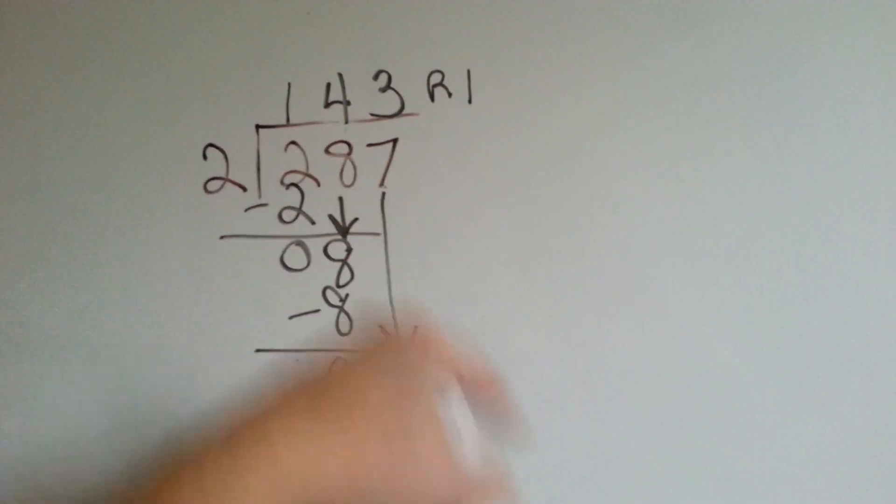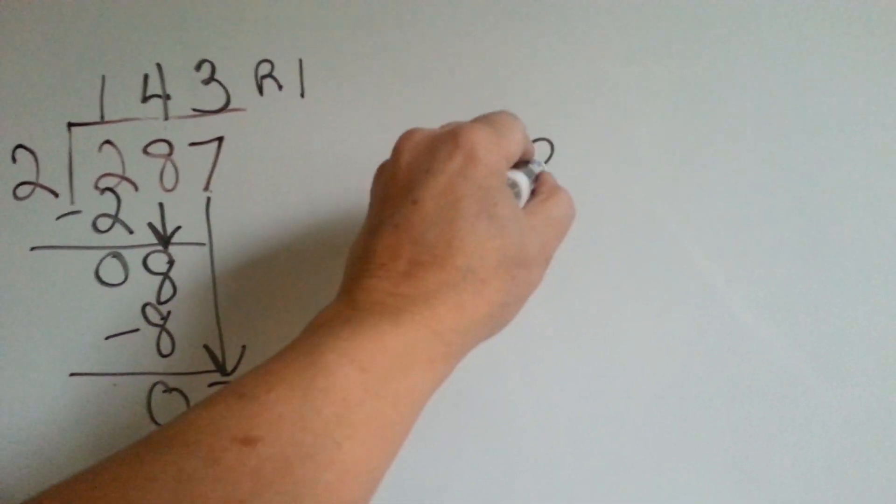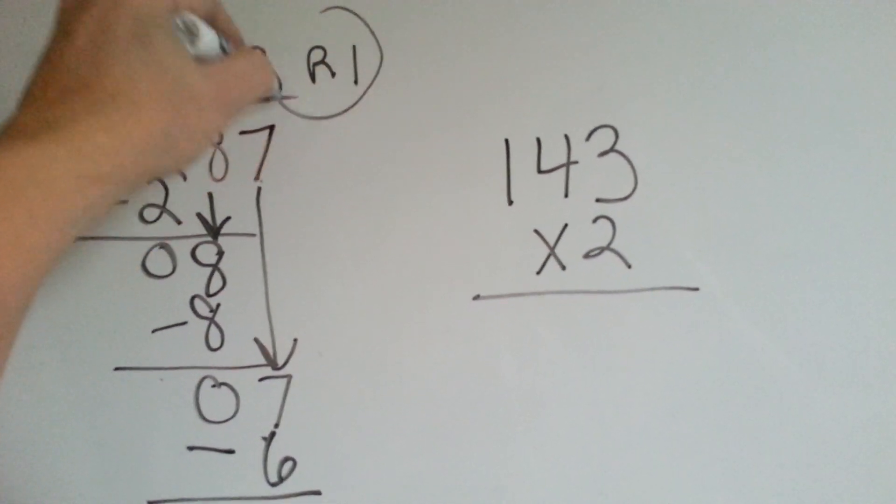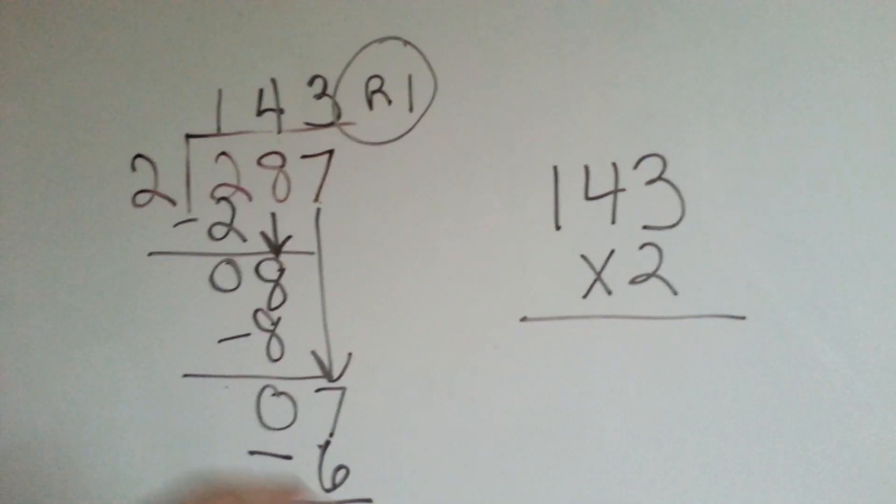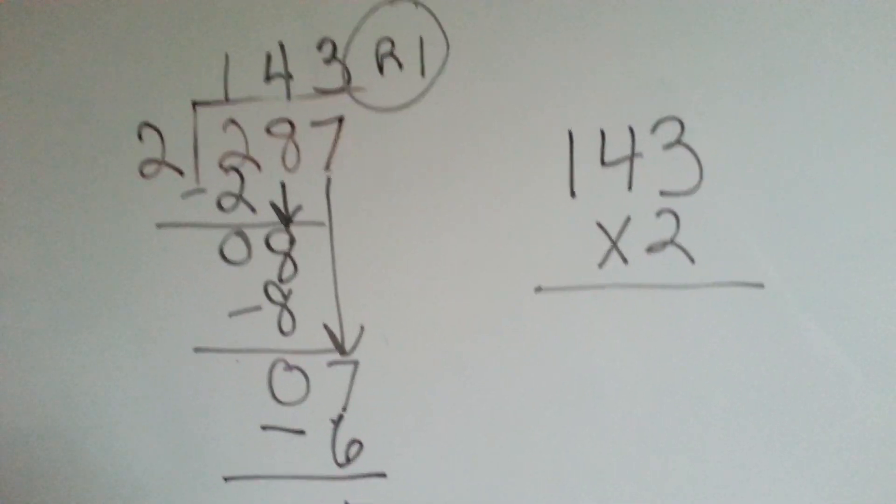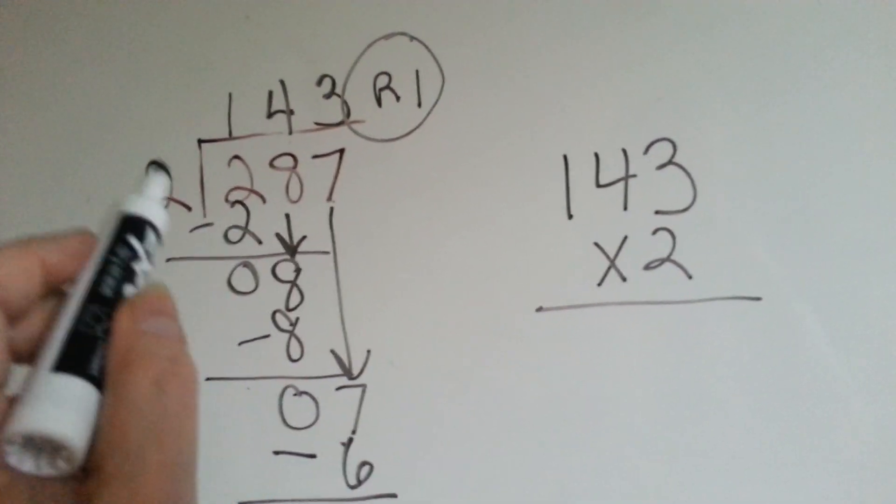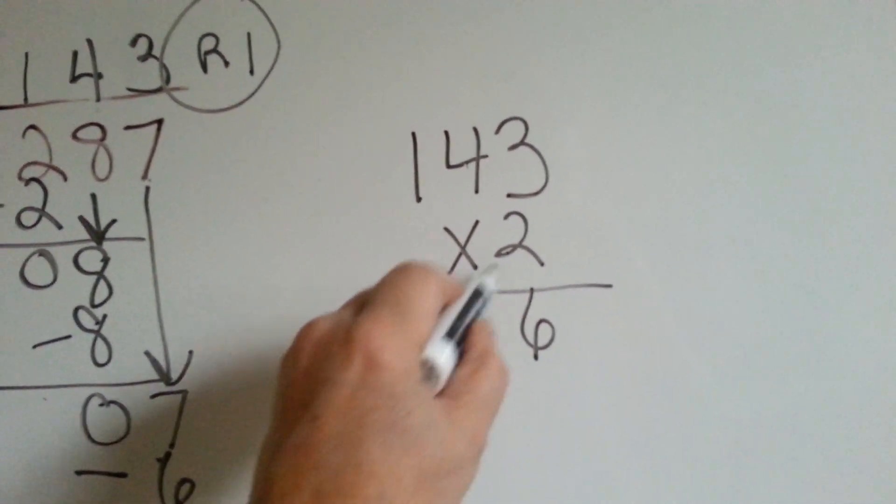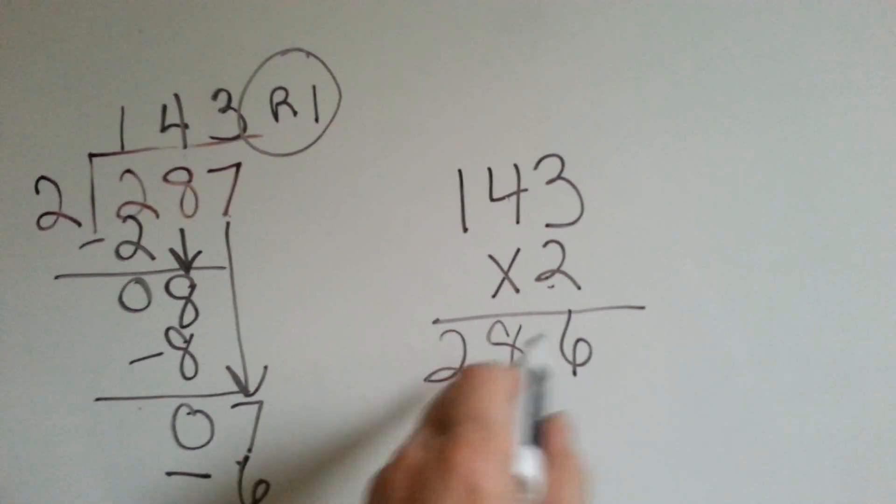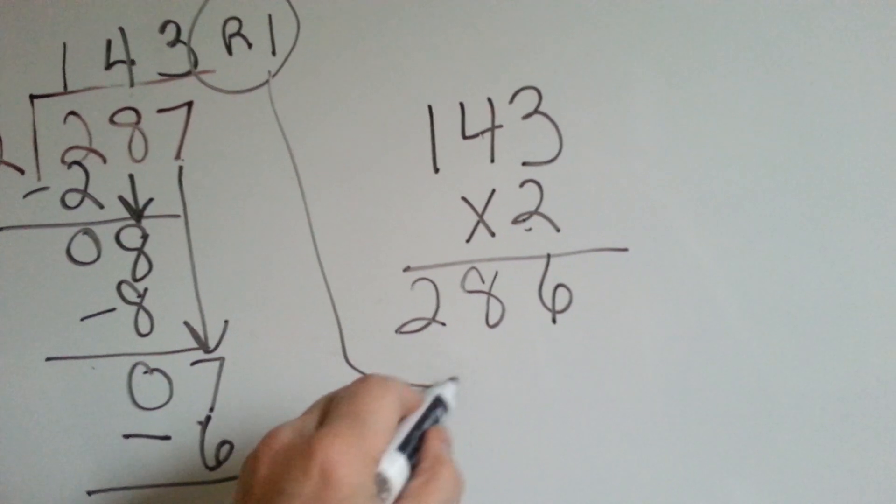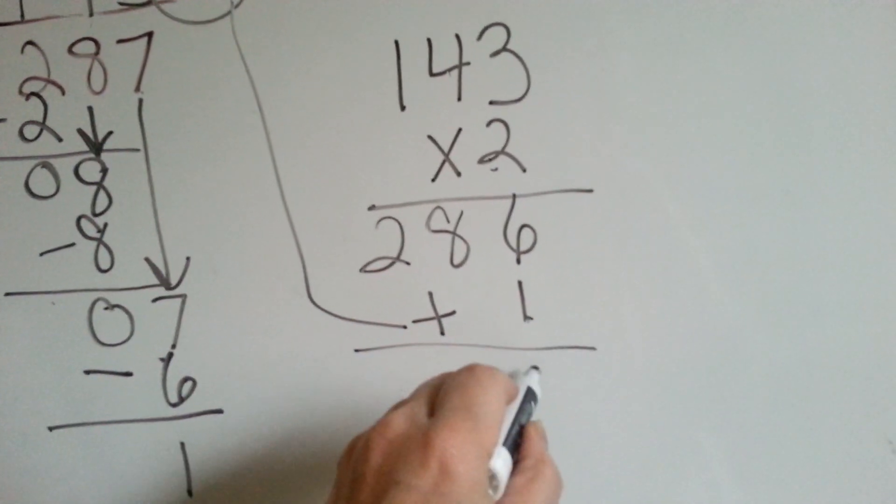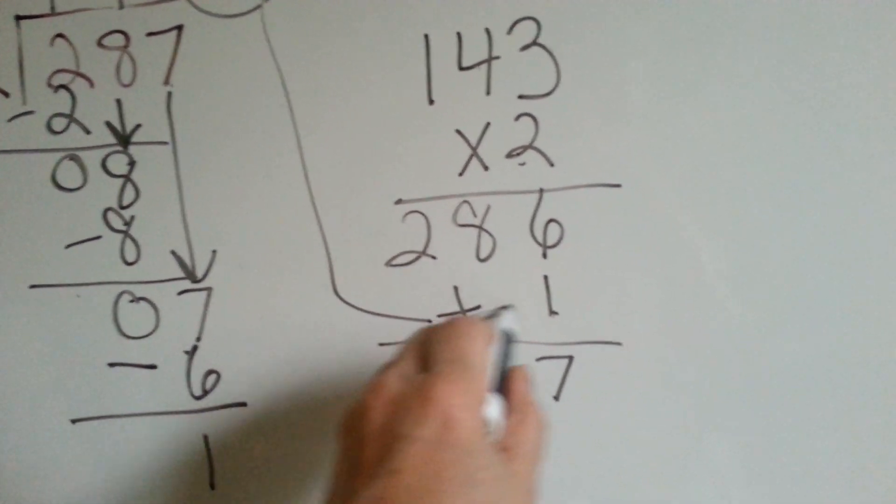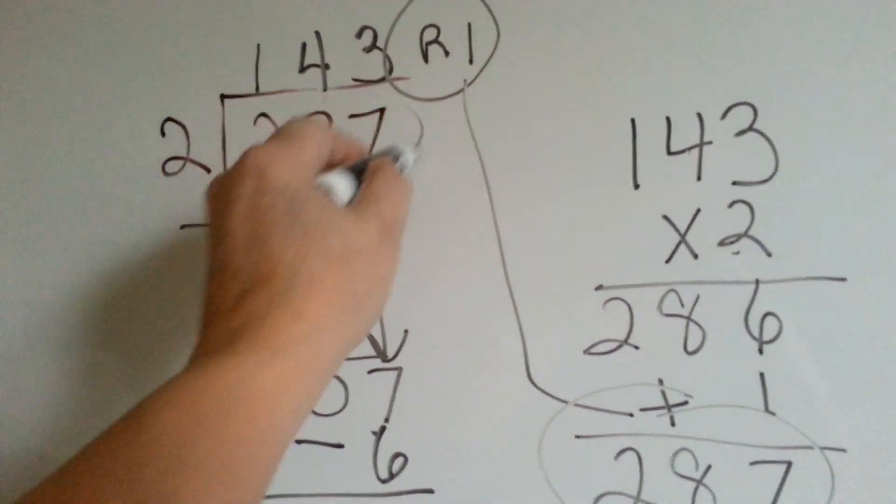So now the number we're trying to get is 287. So we're going to do 143 times 2. And we're going to leave this off on the side for now. For the ones with remainders, you leave them off on the side for now, because we're going to add them later on. So let's do 2 times 143. 2 times 3 is 6. 2 times 4 is 8. 2 times 1 is 2. And we have 286 and now we add the remainder. 6 and 1 is 7. Drop the 8 down. Drop the 2 down. And we have 287, which is the same as this one.